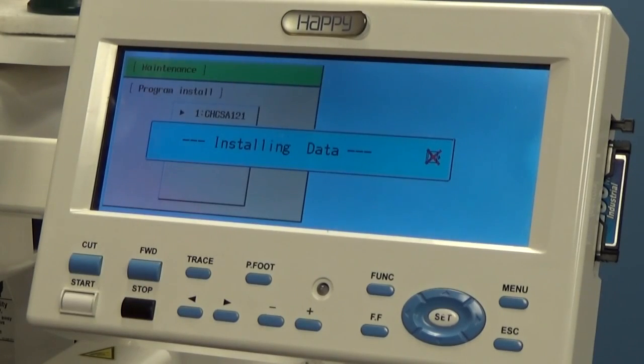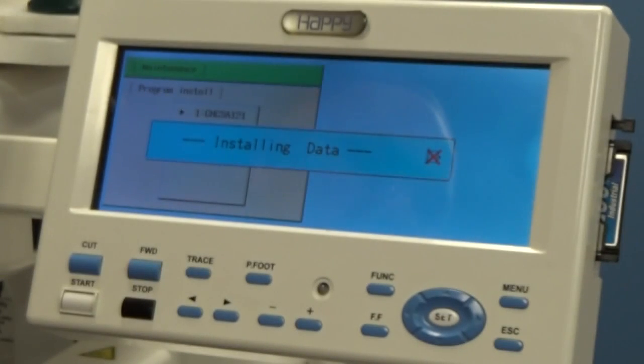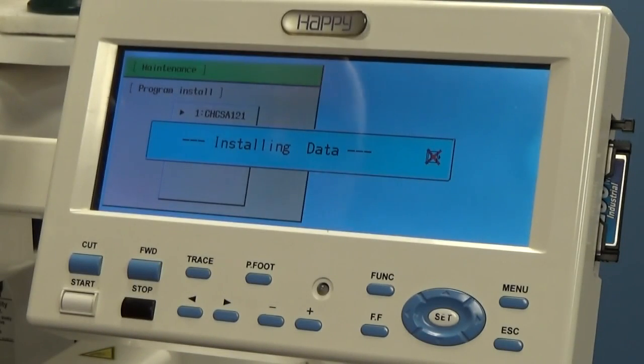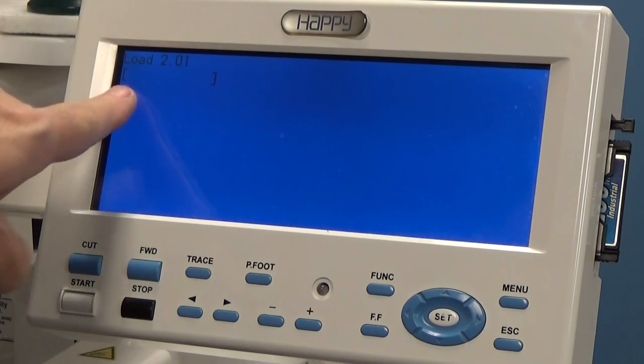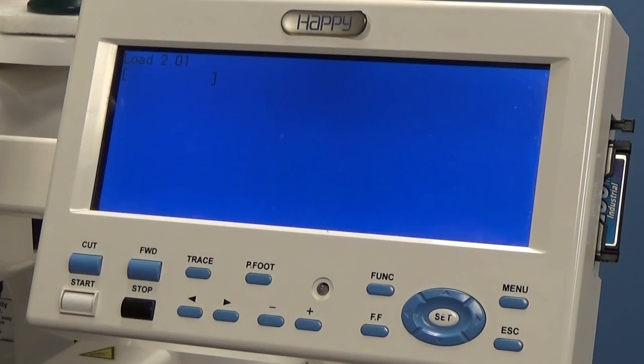You're going to see installing data come up just like normal. This time, the screen is going to actually turn a little bit lighter when it changes. And we're actually going to see load 201. Then we're going to see a progress bar starting here. Momentarily, the progress bar will start. Here we go. You're going to see the red light flash a couple times.